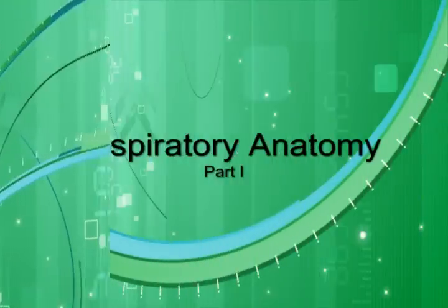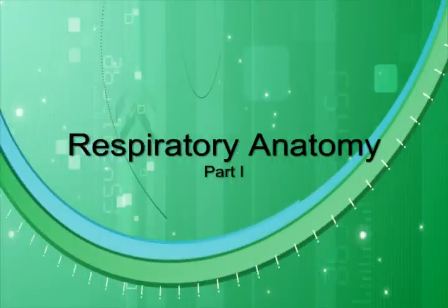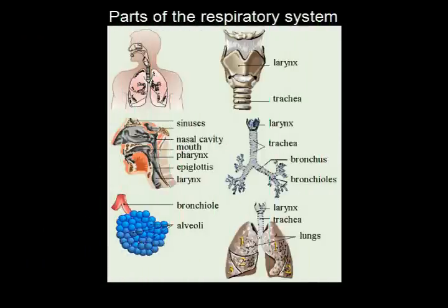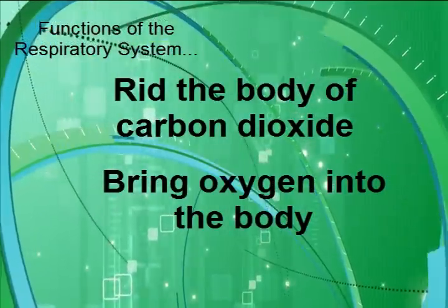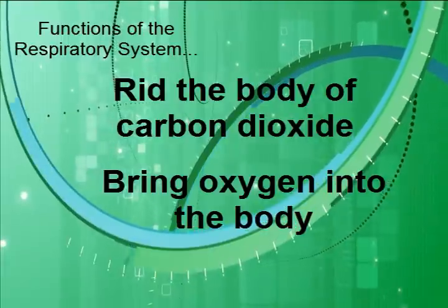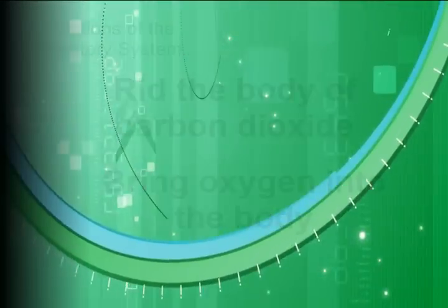We're going to fly through the respiratory anatomy, and then we'll spend a little bit of time on the physiology. Simply, the respiratory system is responsible for the exchange of oxygen and carbon dioxide. Oxygen is required by all the cells in the body in order to function, so the respiratory system brings in oxygen and gets rid of the carbon dioxide. That's the whole purpose of the respiratory system.